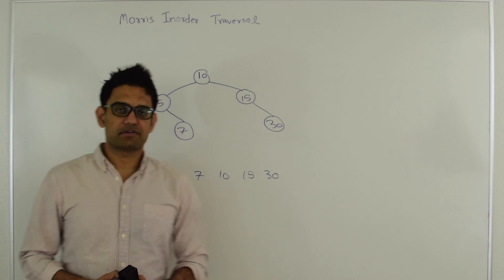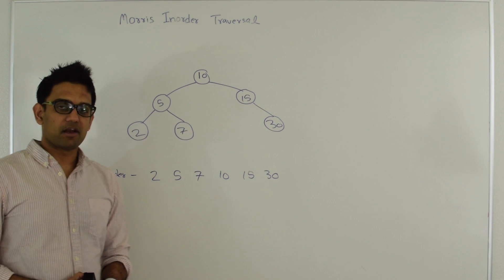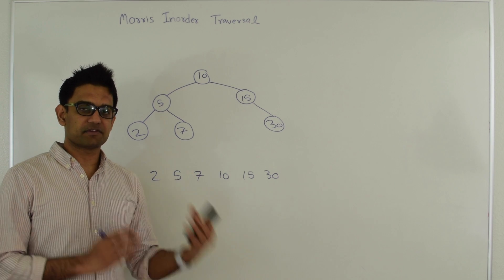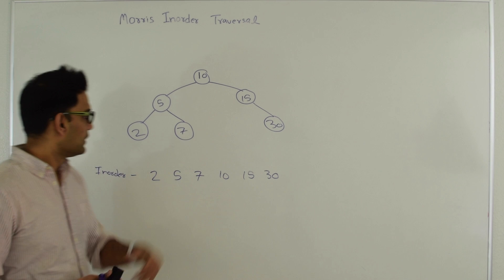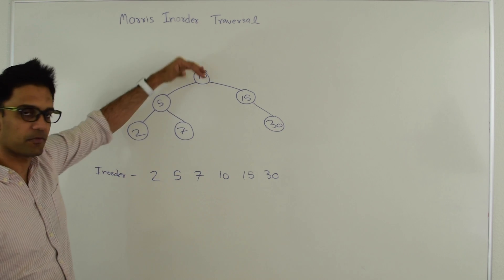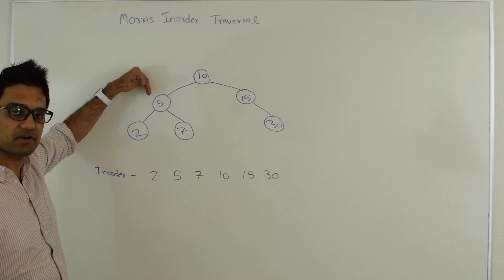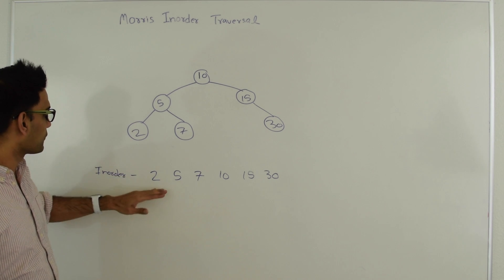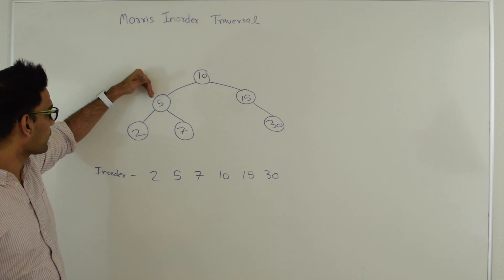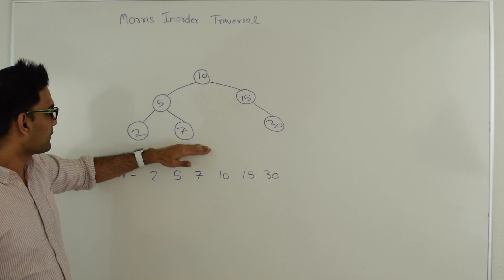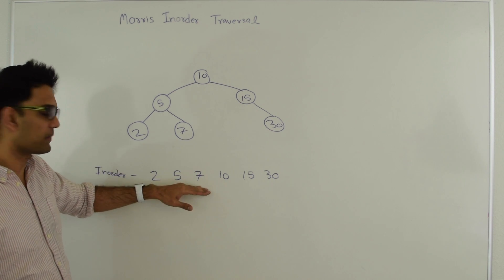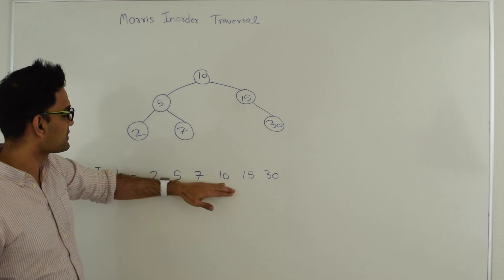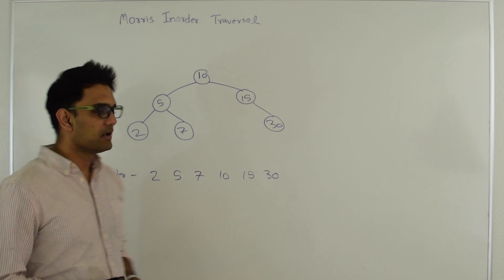First let's quickly talk about inorder traversal. In inorder traversal we first visit the left subtree, then we visit the node, and then we visit the right subtree — this is true for every node. Starting from 10 we go to 5, then to 2. Since 2 has no left subtree we visit 2, then go back to 5, visit 5, then visit 7 on the right of 5. Then we go to 10, visit 10, and repeat the process for the right subtree.